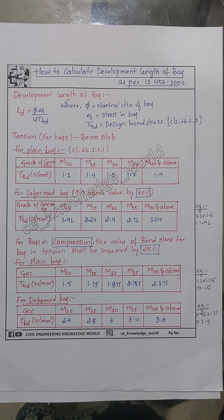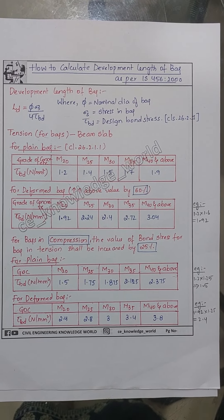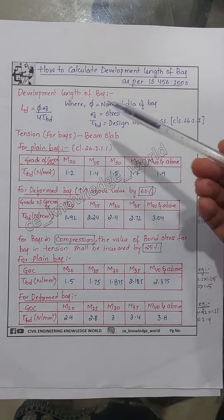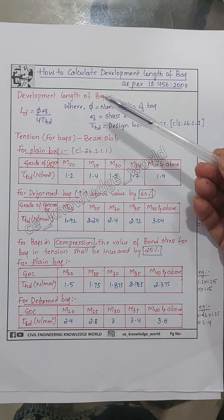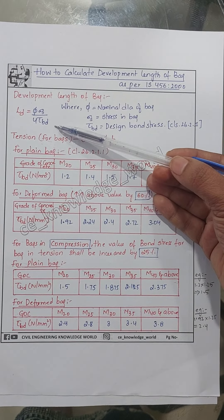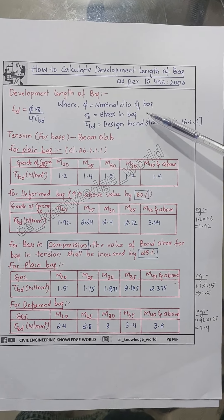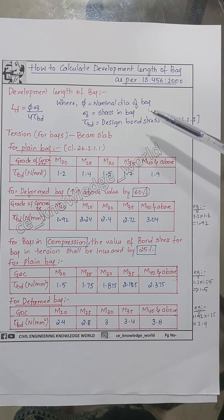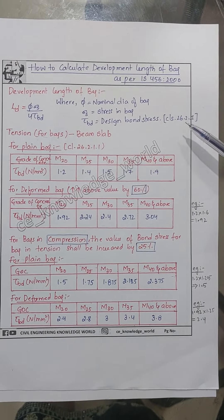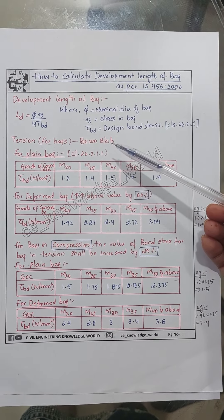Hello everyone. Today in this video we will learn how to calculate the development length of a bar as per IS 456:2000. The development length formula is: Ld = (φ × σs) / (4 × τbd), where φ is the nominal diameter of the bar, σs is the stress in the bar, and τbd is the design bond stress as per clause 26.2.1 for bars in tension.